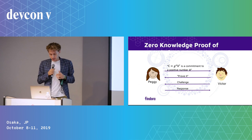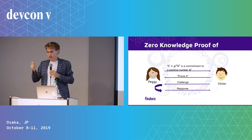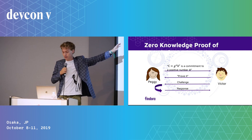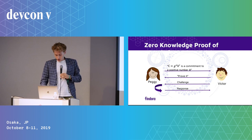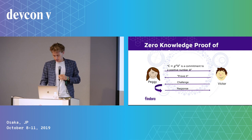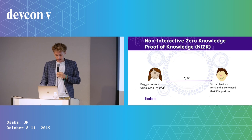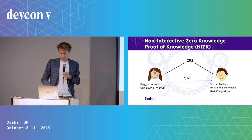The way this works is through an interactive challenge-response protocol where Victor gets to ask questions that Peggy wouldn't know the answer to if the statement weren't true — she could not answer these questions if the balance were negative — but the answers don't reveal any information about what the statement is. What we really need in a blockchain setting is not this interactive proof, but a NIZK — a non-interactive zero-knowledge proof of knowledge — where the prover can just write down the proof and the verifier can read and check it. It's publicly verifiable, relying on a common reference string.